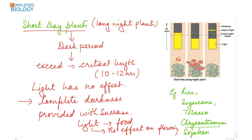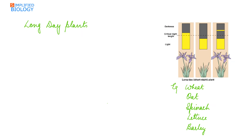If during the long dark period a flash of light is given in the middle of the night, it will inhibit flowering, as it converts the long night into two short nights. Examples of short day plants are rice, sugarcane, tobacco, chrysanthemum, and soya bean. Next are long day plants, also known as short night plants.